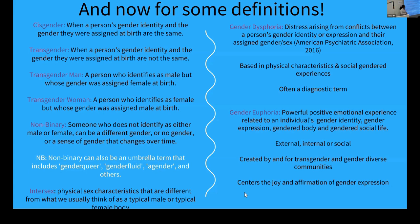Cisgender people experience gender dysphoria and euphoria too, even if they've never labeled it. When you get a haircut that makes you feel like a really powerful woman, or put on pants and feel like a great man — those are feelings of gender euphoria. These terms are often associated with the transgender experience because there's such a sharp contrast, and transgender people often have to go to extra lengths to alleviate gender dysphoria, as the presentation they most resonate with doesn't align with their assigned gender at birth.